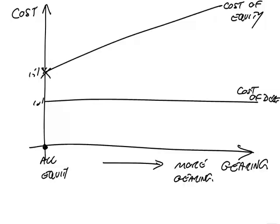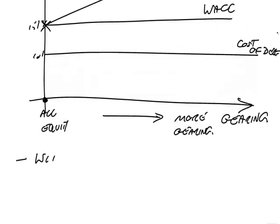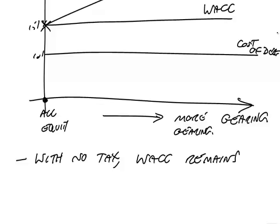You're not going to be examined on that, but it's the lead-in. They said that with no tax, the weighted average cost of capital remains constant — the cheap debt cancels out the higher cost of equity. The weighted average cost of capital stayed constant, and if it does, it's irrelevant how you raise finance.